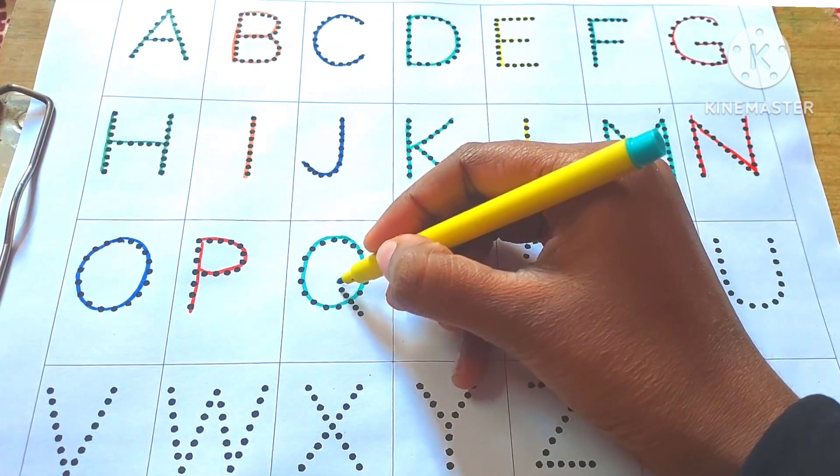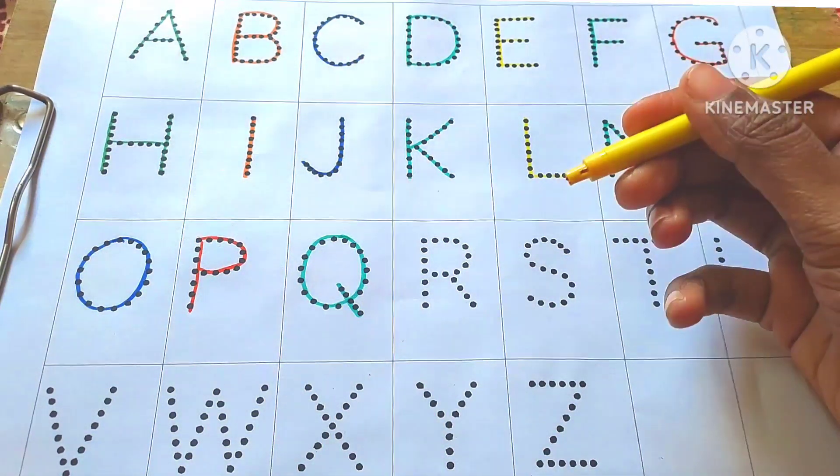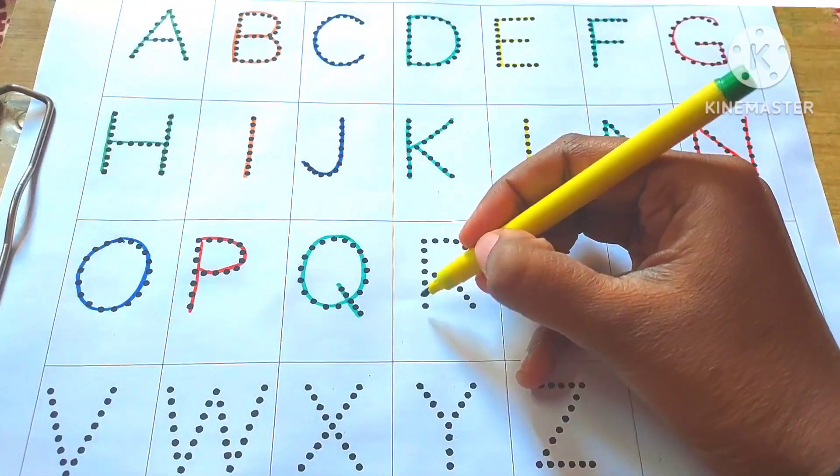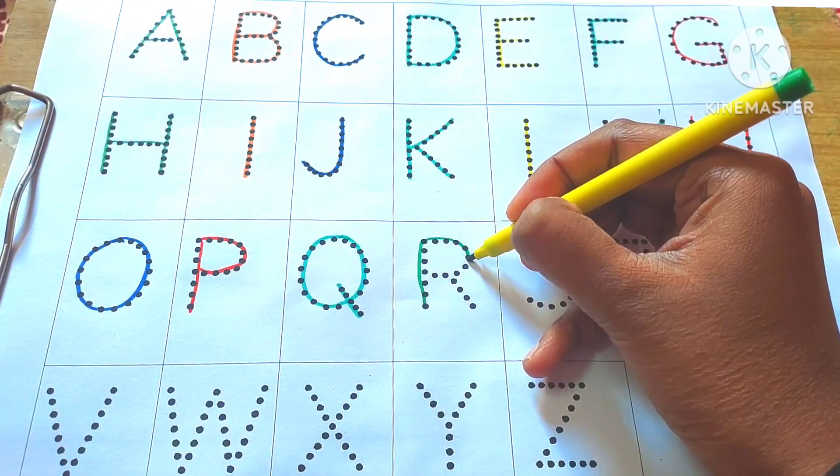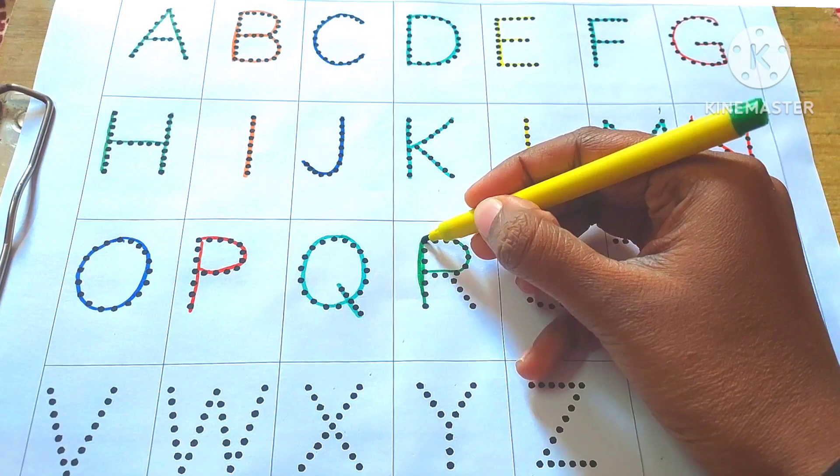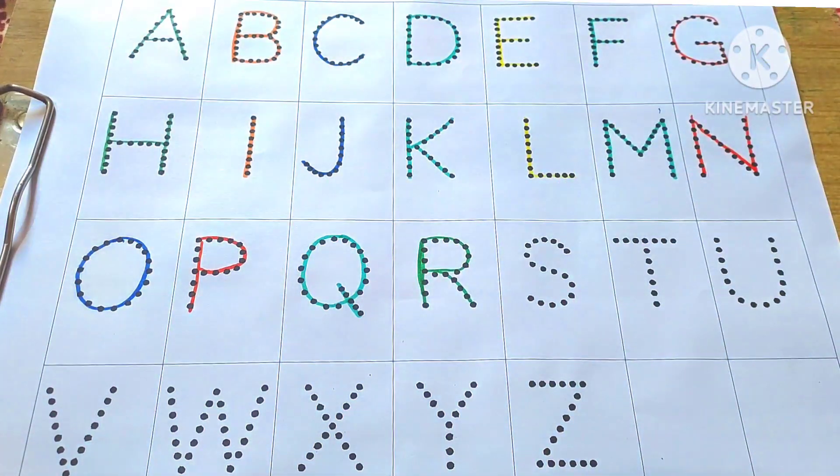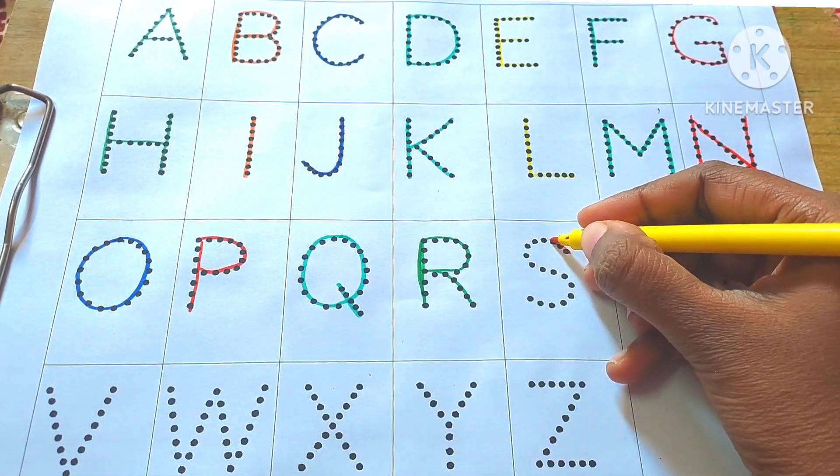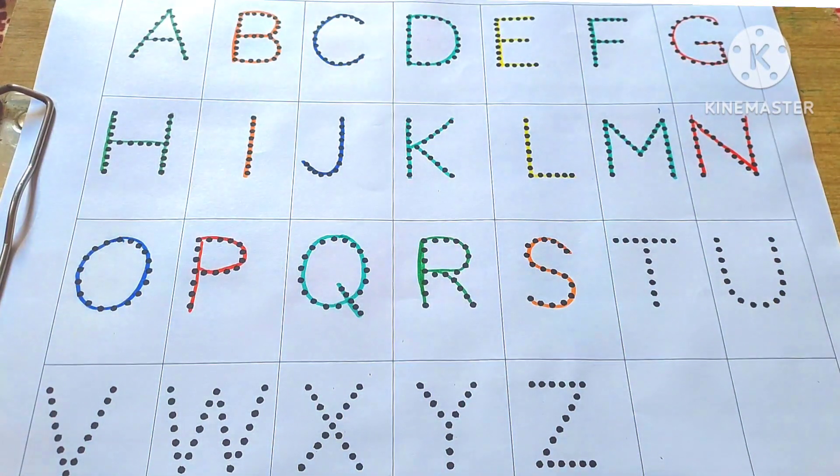Q for rat. R. R for ruler. S. S for sun.